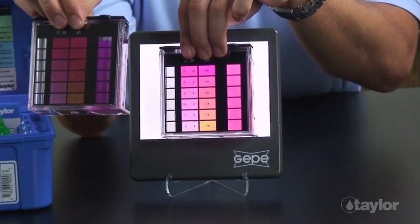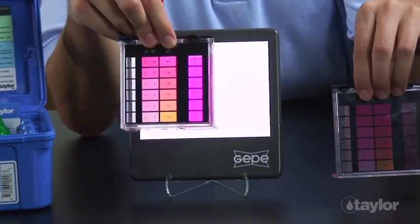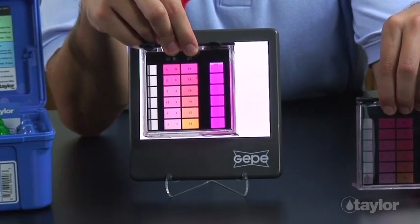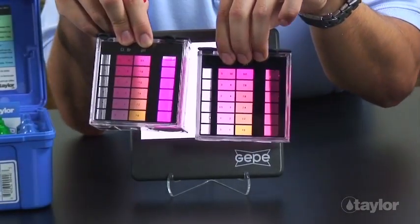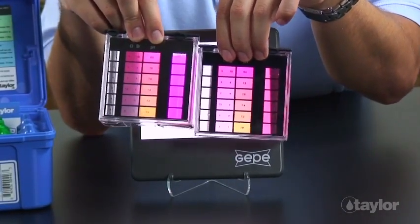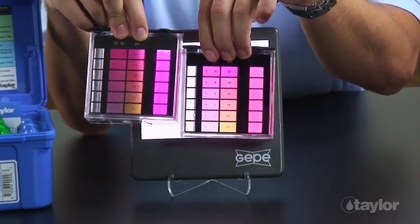Some pool operators will attempt to neutralize the high sanitizer first by adding a drop of sodium thiosulfate, reagent 7, before beginning the test procedure. However, this is not recommended since thiosulfate itself will alter the pH of the sample, leading to another type of inaccurate reading.